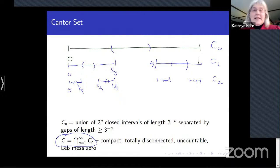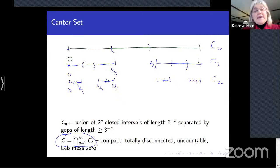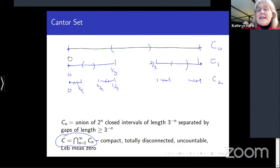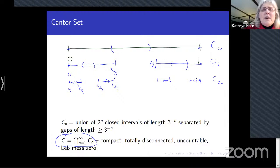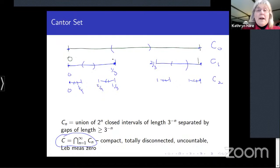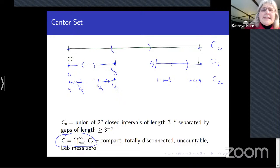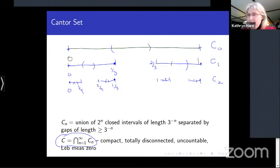At each step you remove the middle third of each remaining interval and keep the outer thirds. The set C_n at step n consists of 2ⁿ closed intervals, each of length 3^(-n), separated by gaps of length at least 3^(-n). The Cantor set is the intersection of all these sets C_n. The point 0 is in every C_n, as is 1, and so are all endpoints arising in the construction.